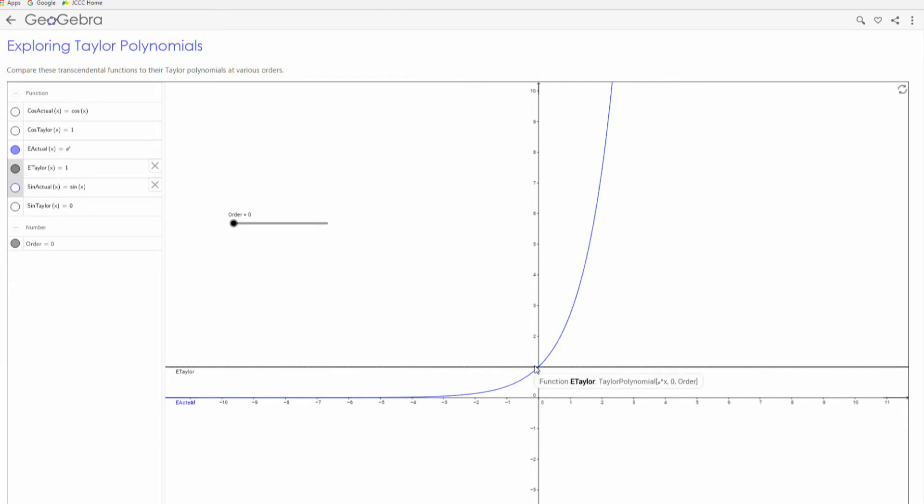And all that does is makes a linear equation that will match the function and that's it. So it's just a constant that passes through the same point as the function. If we move up to first order, we have the tangent line. Remember the first order Taylor polynomial is just the same as our tangent line from Calc 1. It passes through the same point there at zero and also has the same slope at zero.